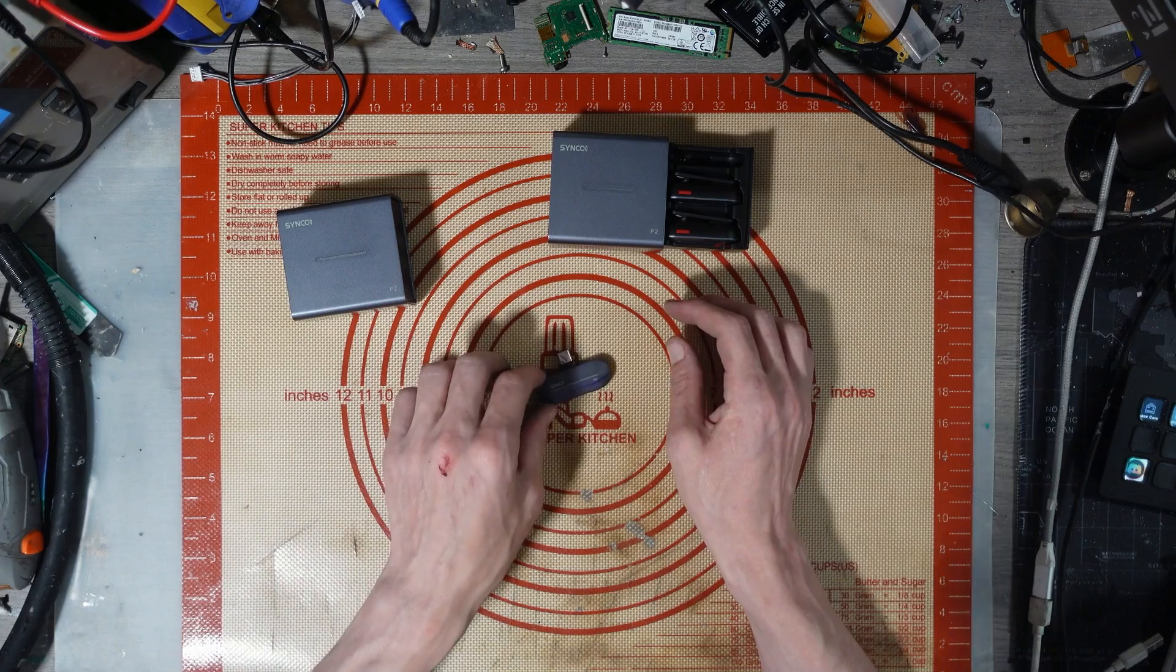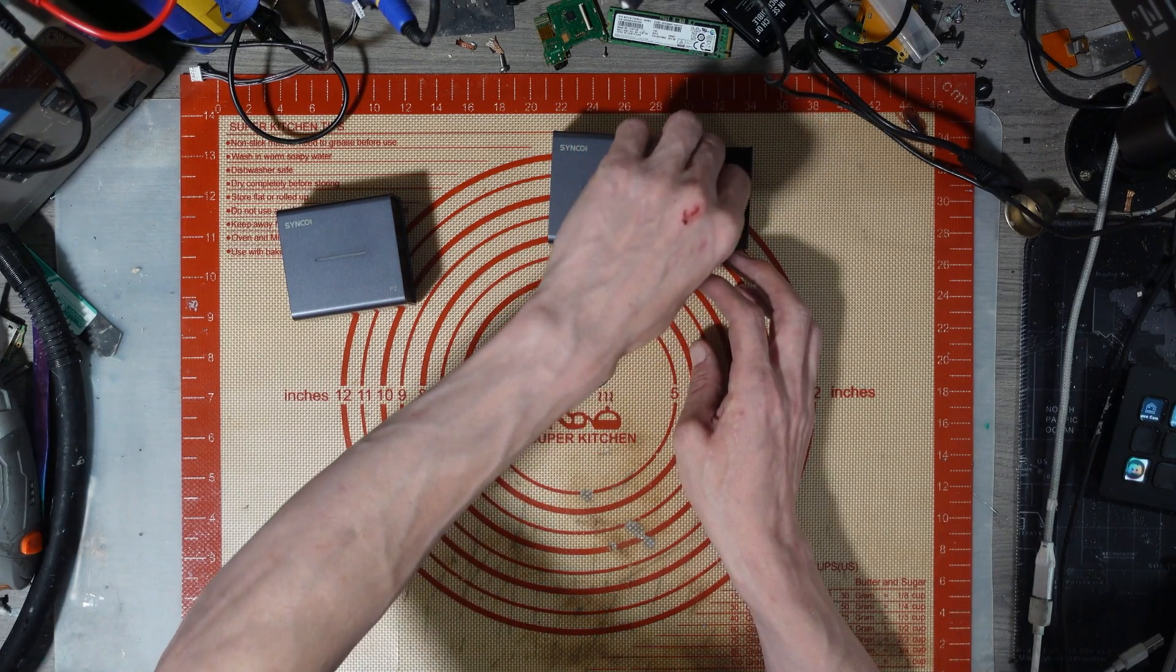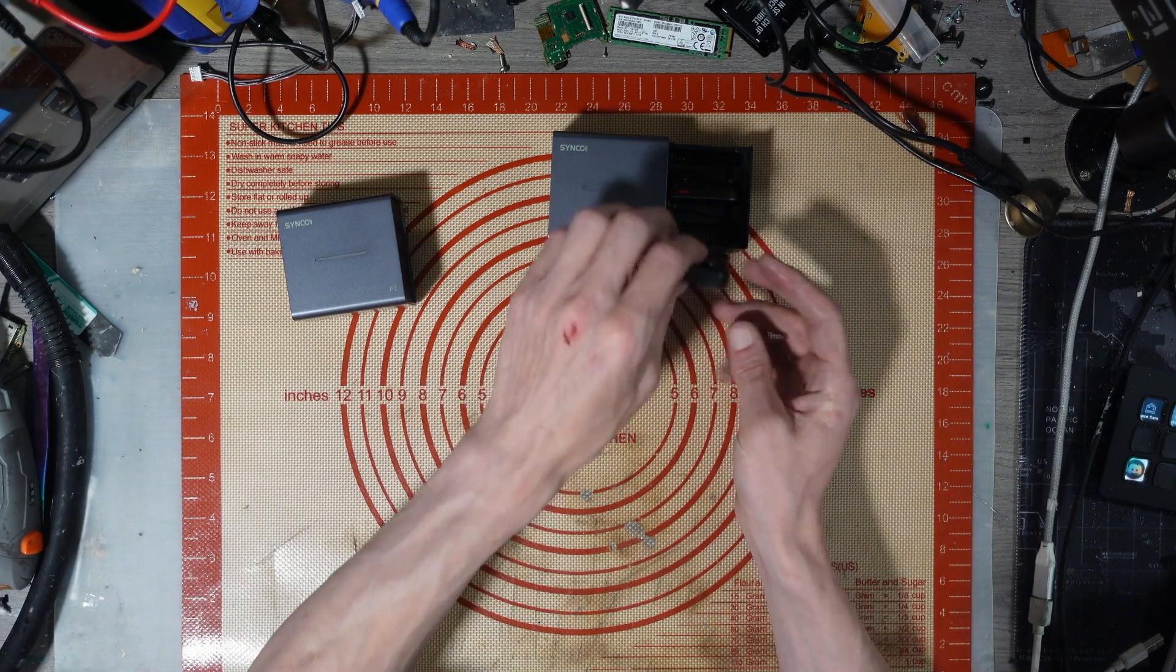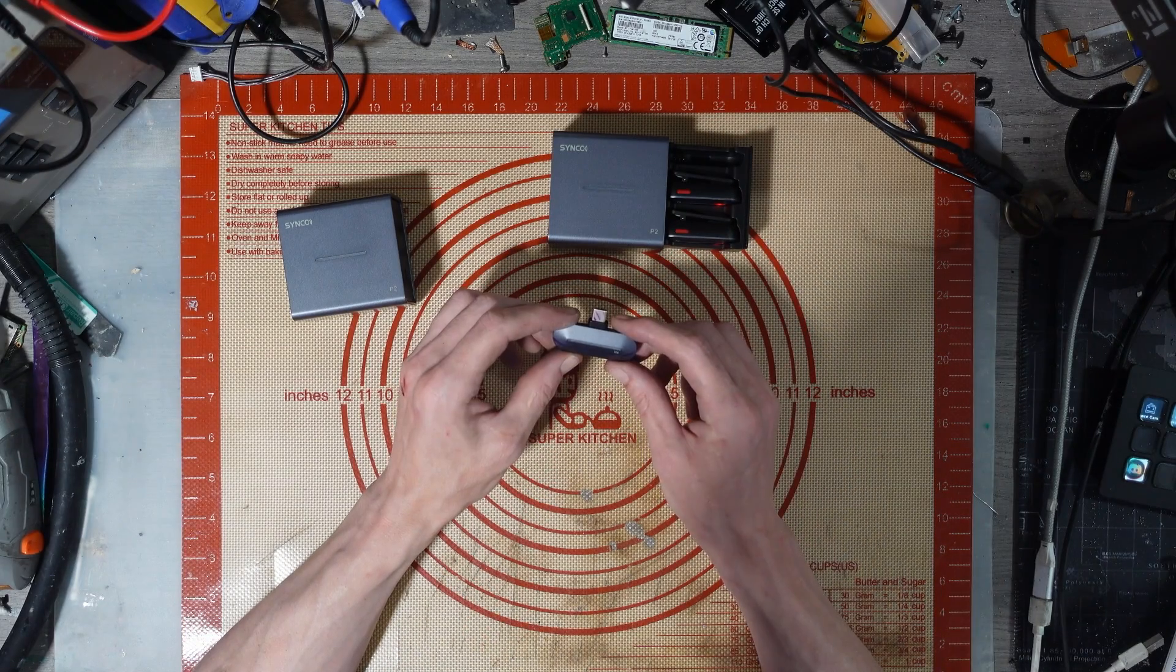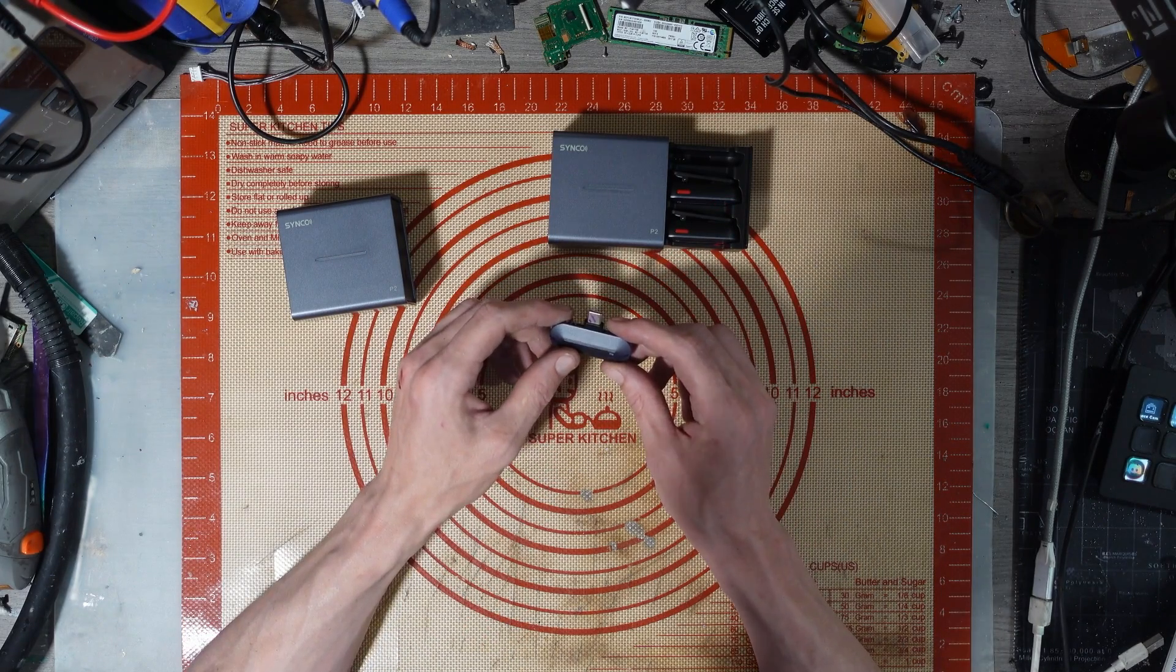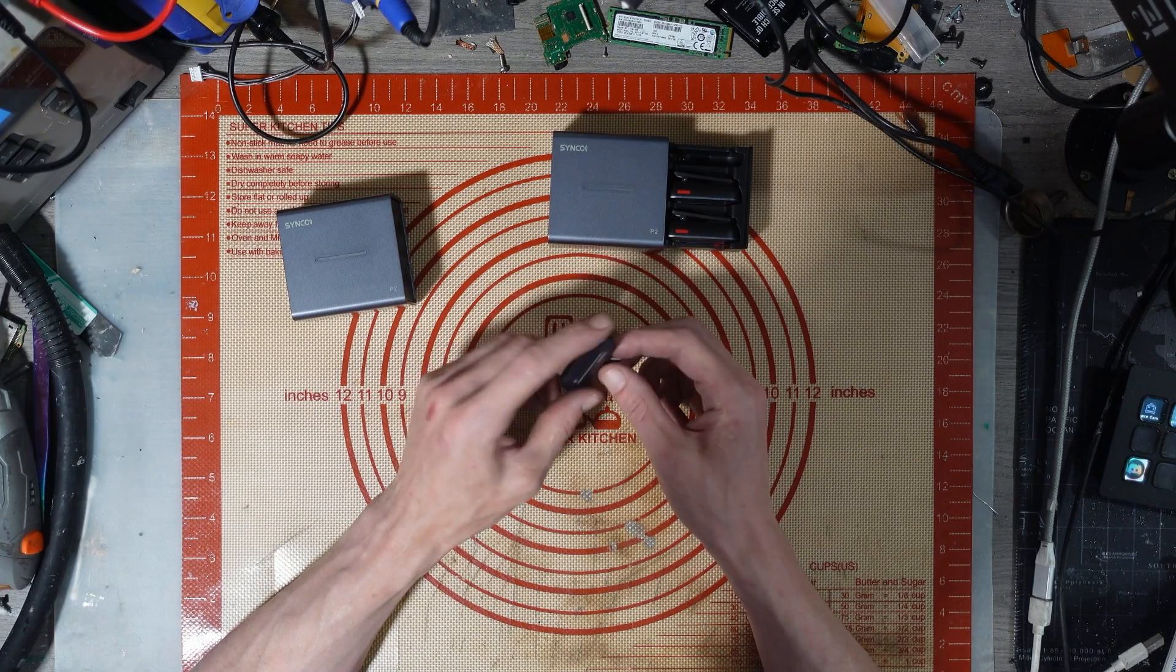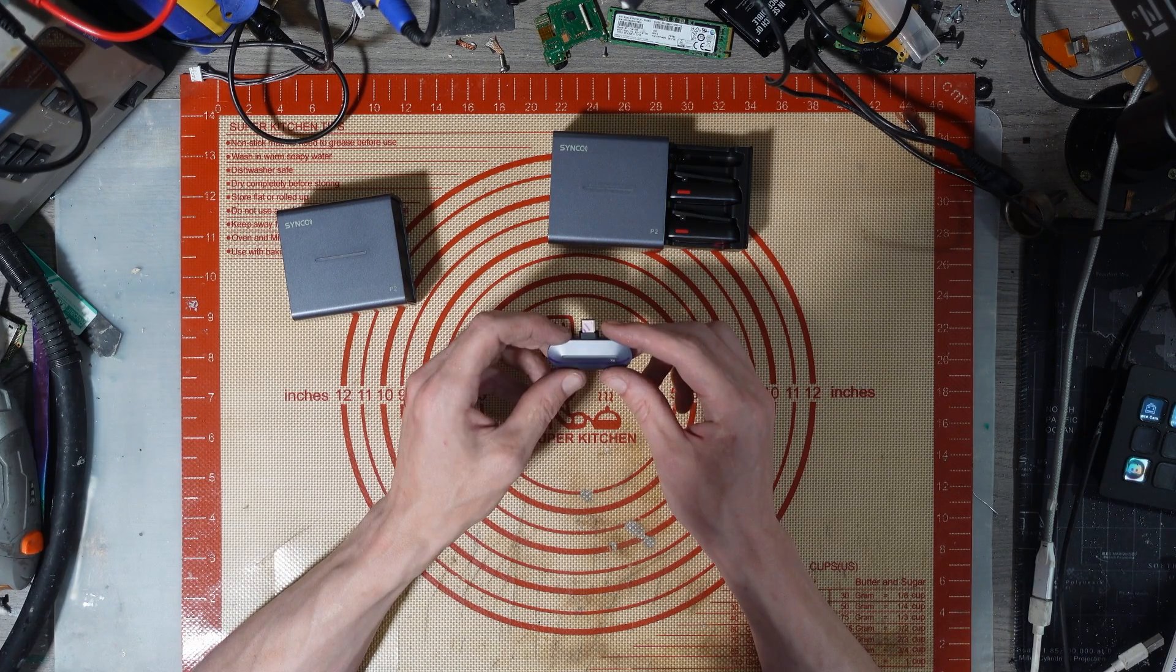You've got the receiver there and then you've got a couple of transmitters. They're supposed to connect to your phone so you can have decent quality audio, and apparently they're really good quality.